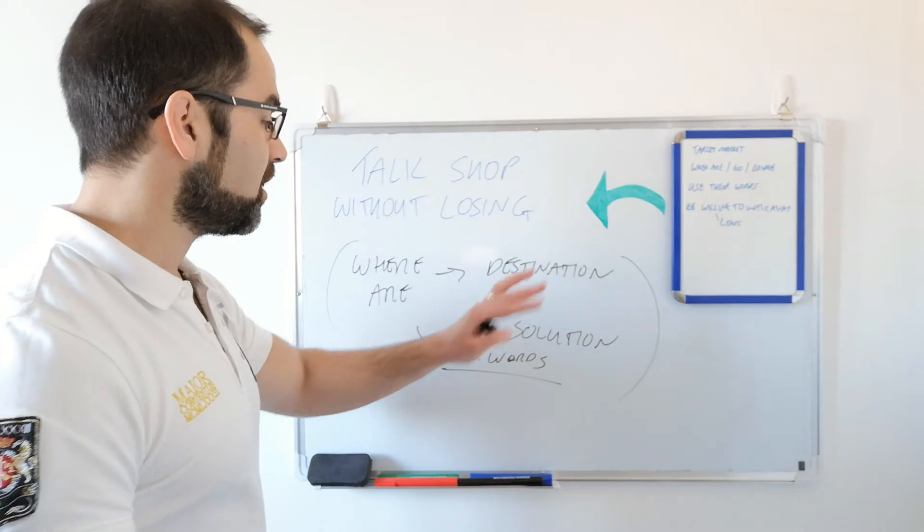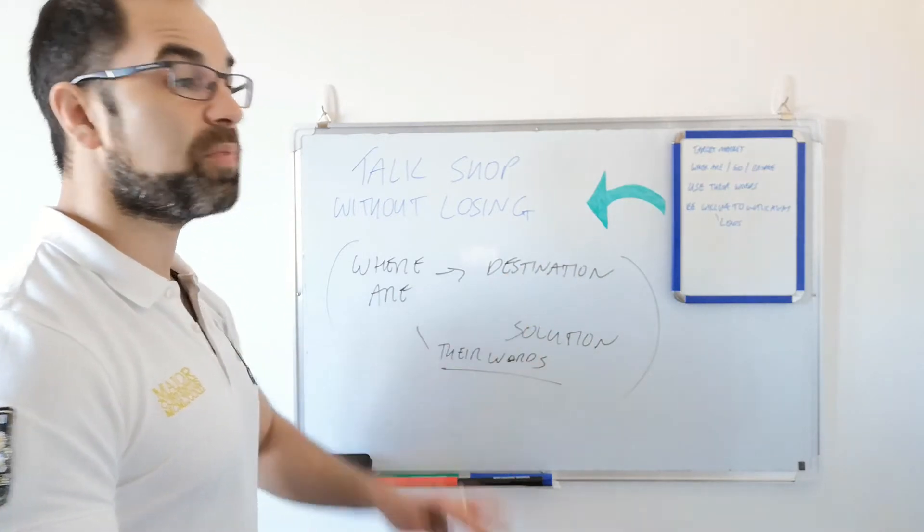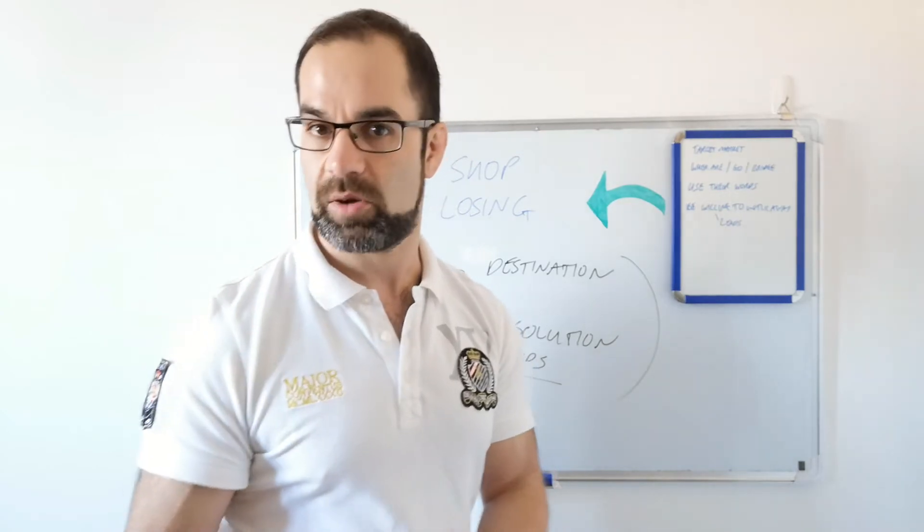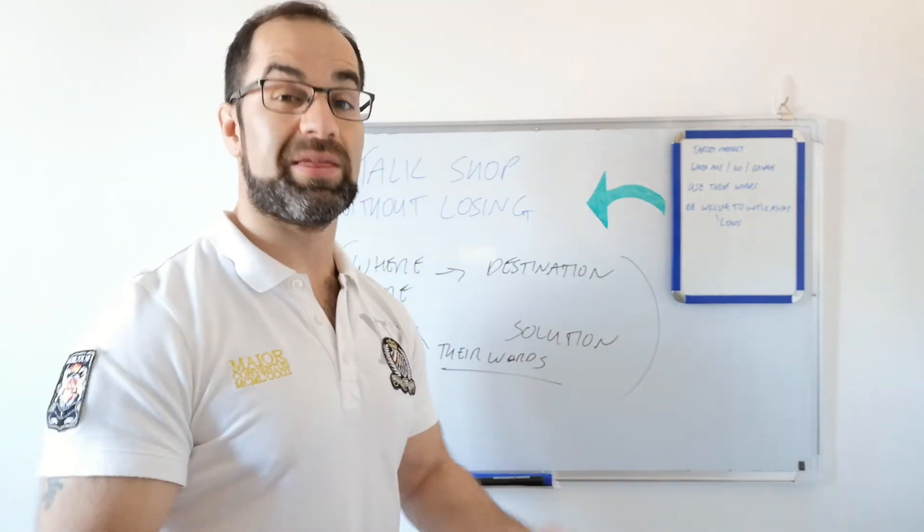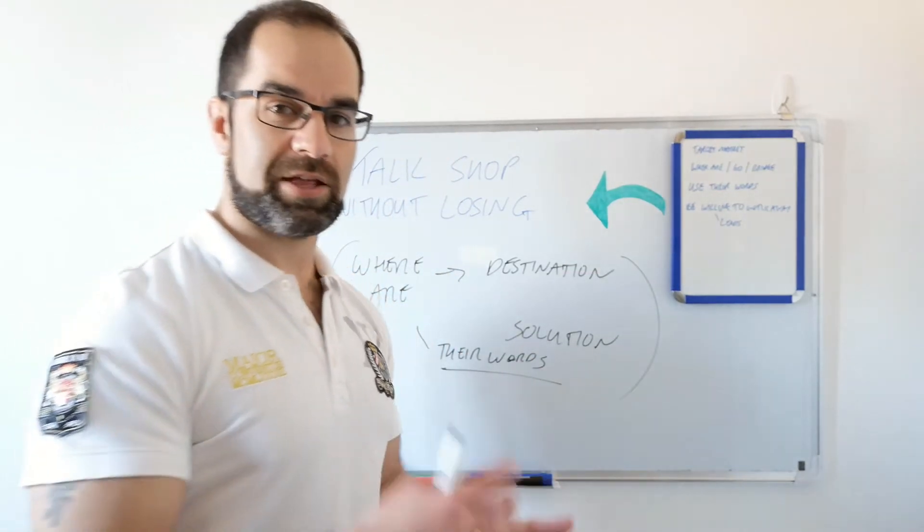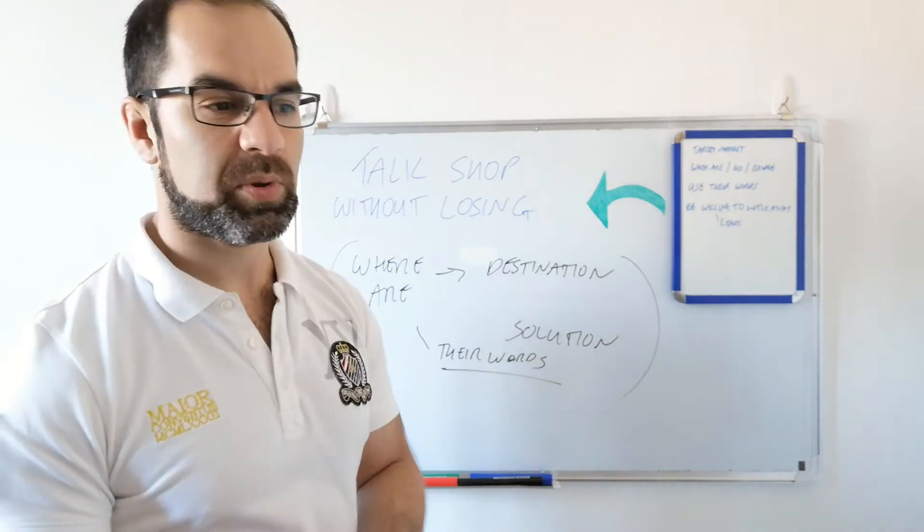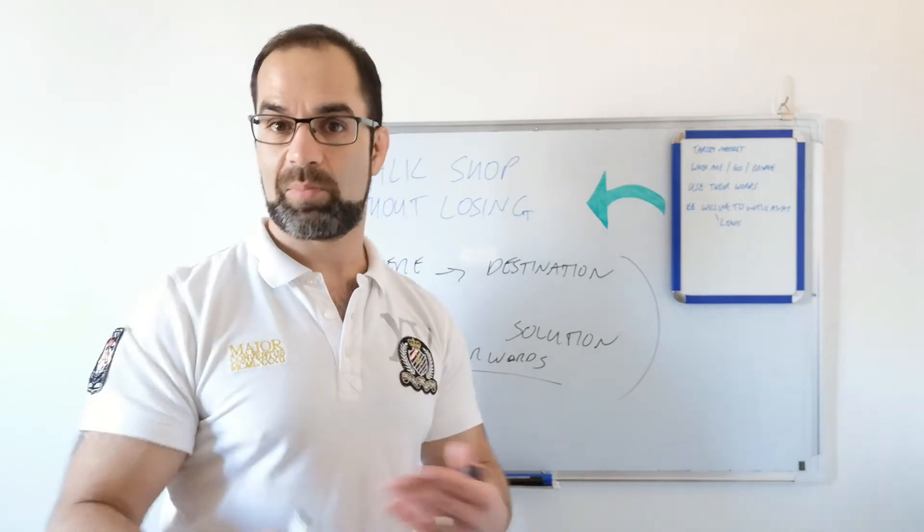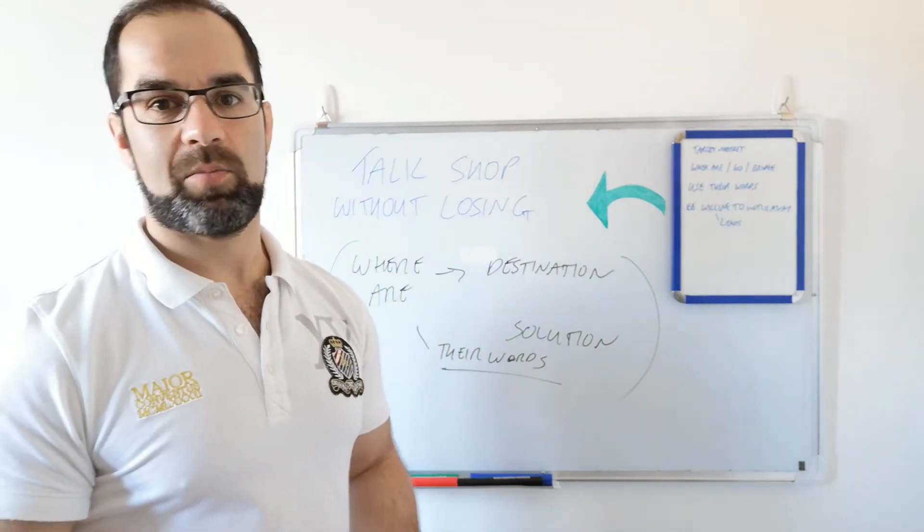So we need to find a way of using their words. And we can do that with that simple process that I gave you. Where are they? Where do they want to be? Do they have a solution? Probably not. Well, would they like one? So now when you introduce the solution, i.e. your business, you're actually helping them. You're now a helper, not a salesperson. You're now a helper, not a, oh, just want to pitch me. Because if they just said, I'm unhappy, let's flip that example around.